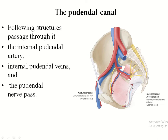This is the greater sciatic foramen and this is the lesser sciatic foramen. The greater sciatic foramen is divided into two foramina by the piriformis muscle — the above foramen and the downward foramen. Below the piriformis muscle, two structures exit: one is the pudendal nerve, which is derived from the sacral plexus, and the other is the internal pudendal vessels.